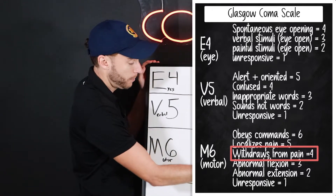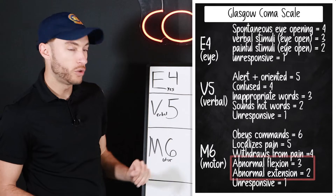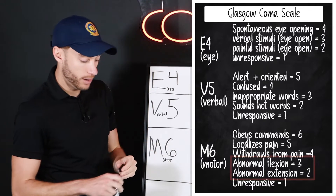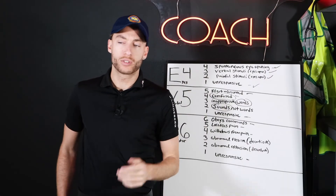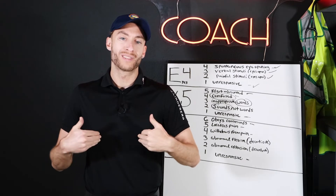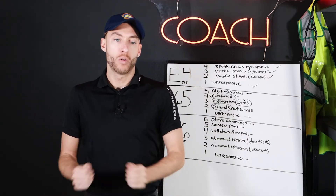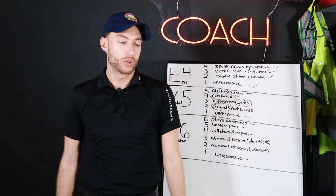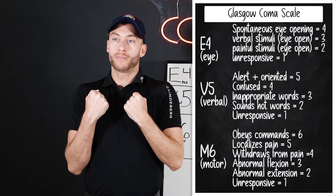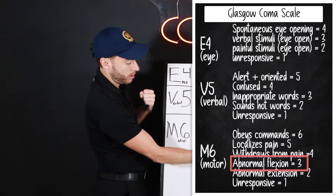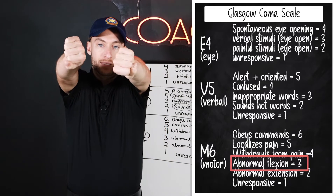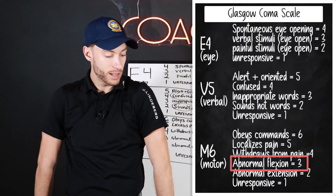Now there are two more specific ones: abnormal flexion and abnormal extension. Decorticate posturing — remember 'corticate' means toward the core — is abnormal flexion, where the arms flex inward like this. Decerebrate posturing is abnormal extension, where the wrists rotate outward and the arms extend out to the sides like this.